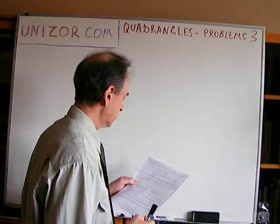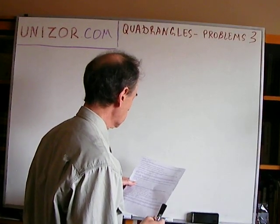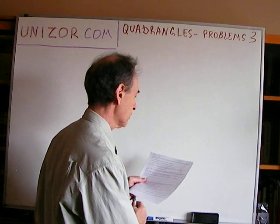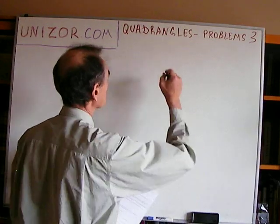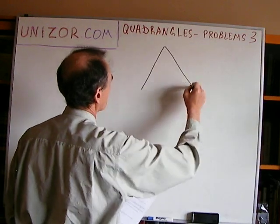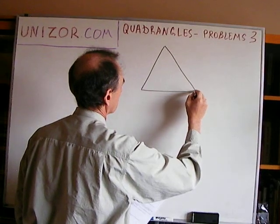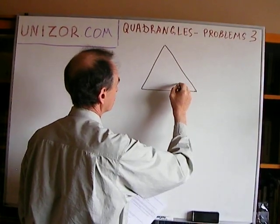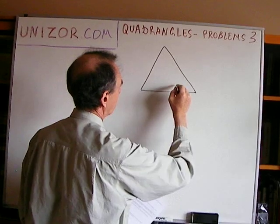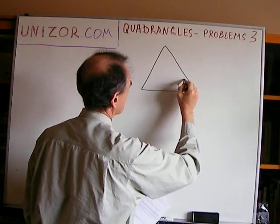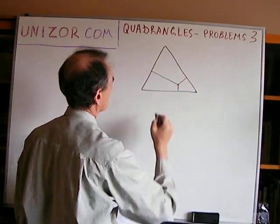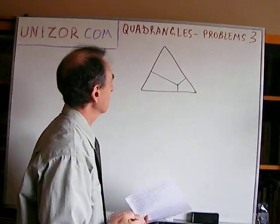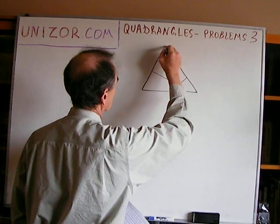Prove that in an equilateral triangle, the sum of distances of any internal point to all three sides is constant and equal to the altitude. This is an equilateral triangle, and we need to prove that the sum of the distances from a point to these three sides is the same as an altitude.